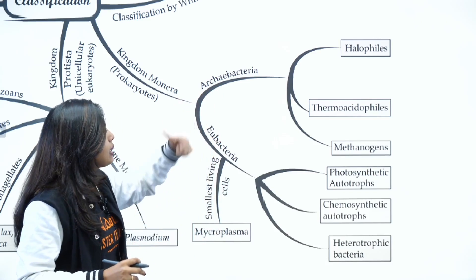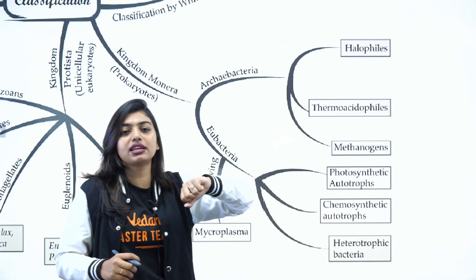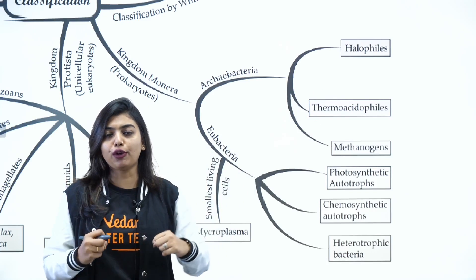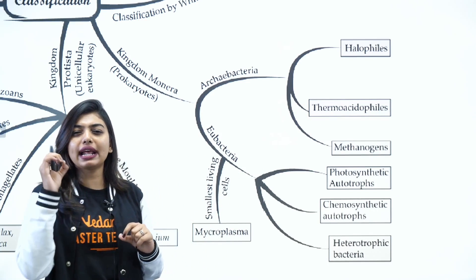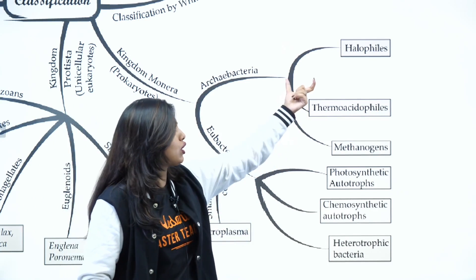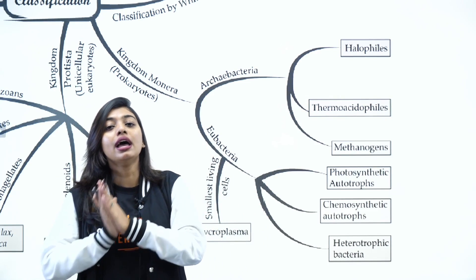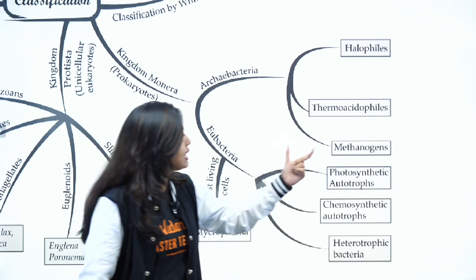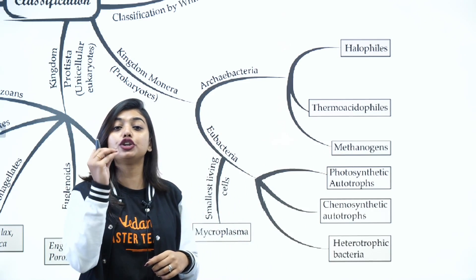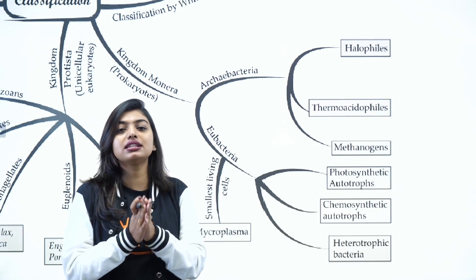Archaebacteria - classification is given depending on where it is found. The ones which are found in extremely salty conditions are called halophiles. The ones found in extreme acidic conditions and extreme temperature are called thermoacidophiles. And then we have methanogens that are found in ruminant animals or cattle where they will be able to form methane.